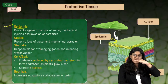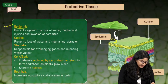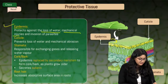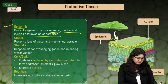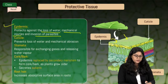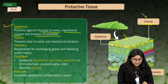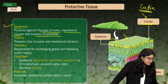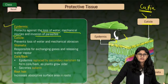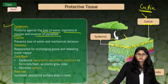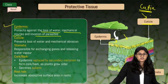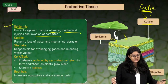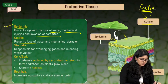The epidermis acts as a barrier, helps in reducing the loss of water, prevents mechanical injuries, and prevents invasion by parasites. Apart from that, it has a waxy coating called the cuticle. Cutin is the substance that makes up the cuticle — it prevents loss of water and mechanical injuries.